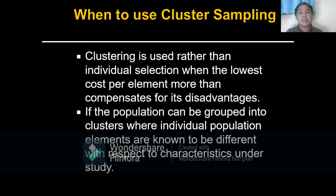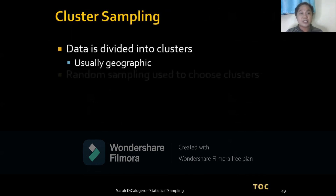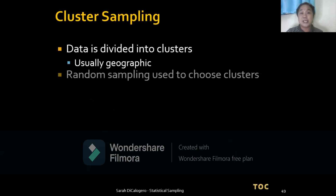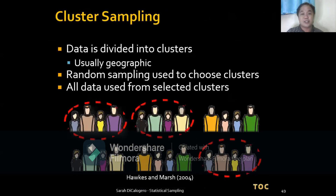Cluster sampling is used rather than individual selection when the lowest cost per element more than compensates for its disadvantages. It is used when the population can be grouped into clusters where individual population elements are known to be different with respect to the characteristics under study. How to use it: data is divided into clusters, usually geographic; random sampling is used to choose clusters; and all data is used from selected clusters.